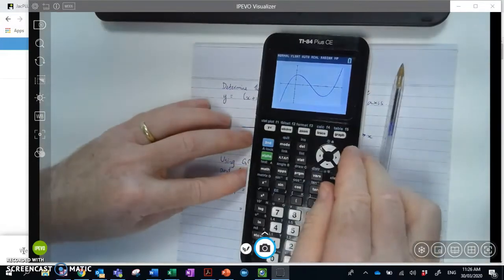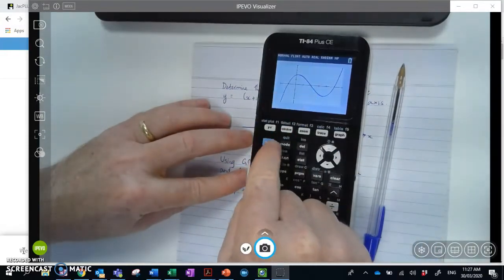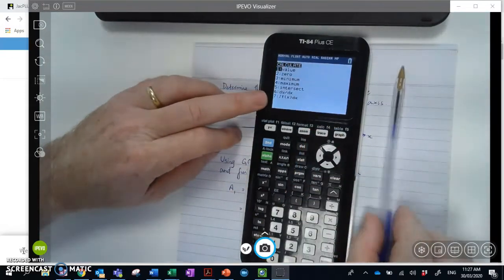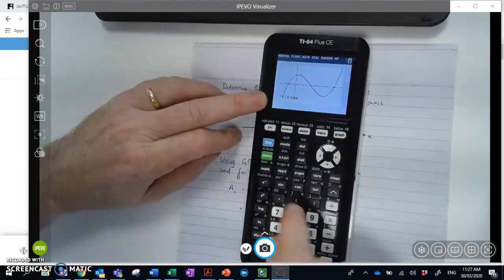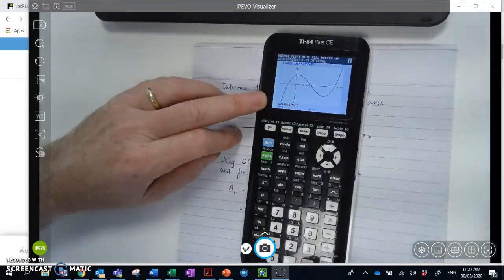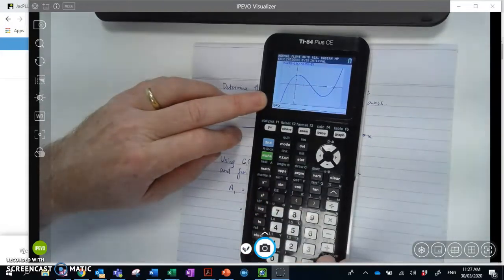I'll go, having the graph on there, I'll go second calc, and then choosing option 7, which is the integral option. I can then, I'm then prompted for my lower limit, which we've just discussed as negative 1. And then prompted again for my upper limit, which is 2.